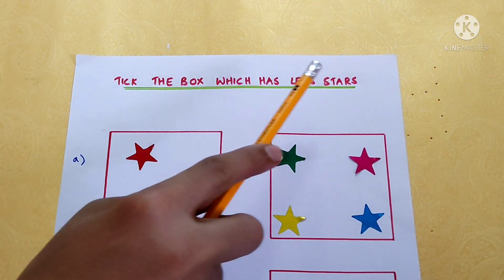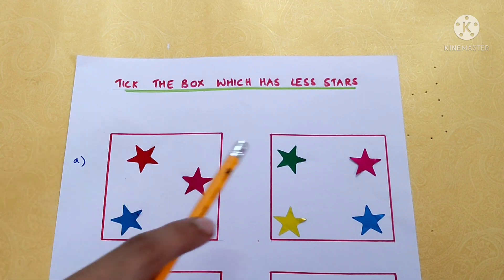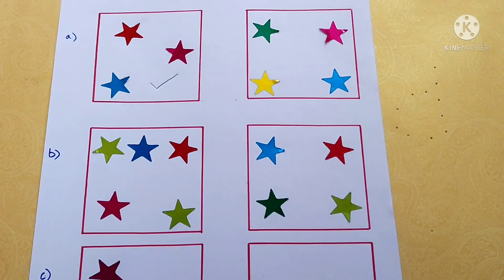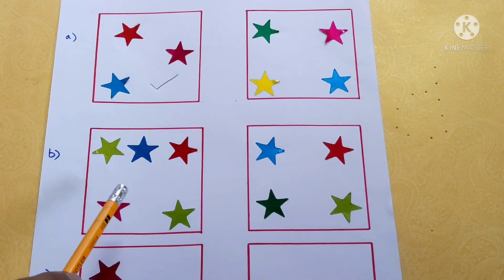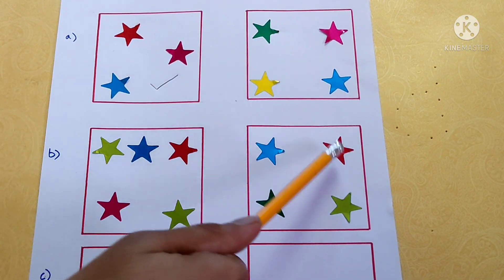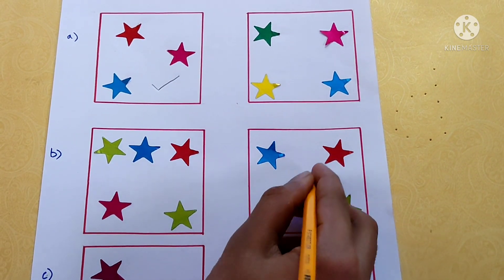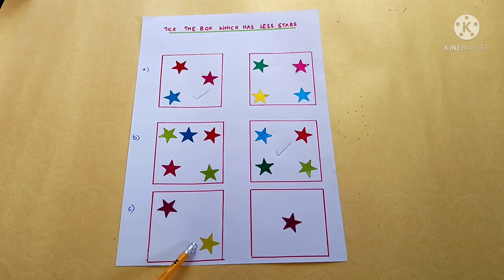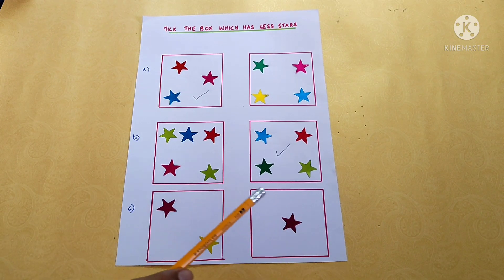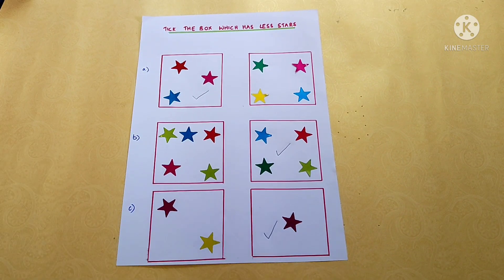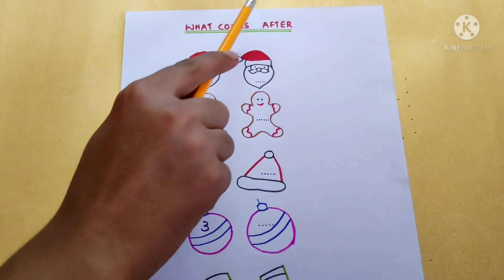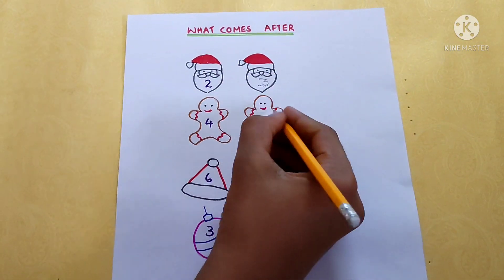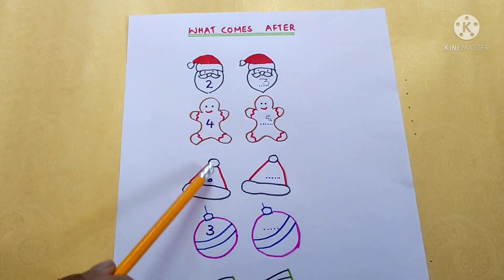Tick the box which has less stars. 1, 2, 3. 1, 2, 3, 4. 1, 2, 3, 4, 5, 6. 7.